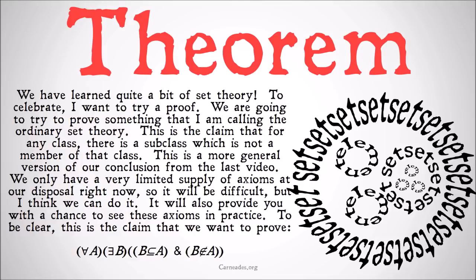To be clear, this is the axiom we want to prove: for all a, there exists a b such that b is a subclass of a and b is not a member of a. Note that before we've proved this, we are allowed to substitute classes and sets interchangeably because we haven't shown them to be different. But after we prove this, we won't be.